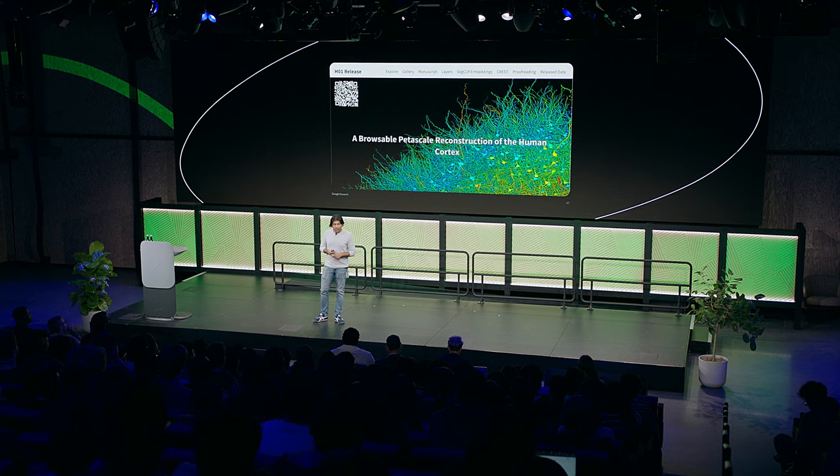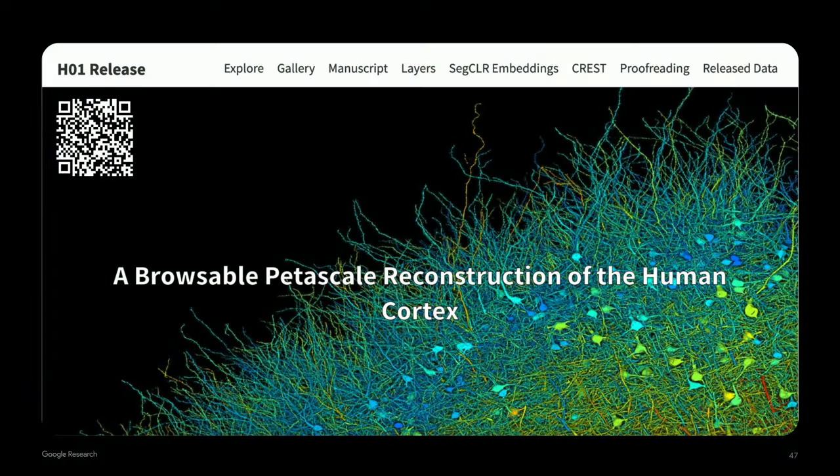That's sort of the beauty of science like this. We don't need to be biased about what to look for. The goal is to provide a data set in which it's all there, and then a large community of researchers can find and study things on their own. We made all of this data public and easy to navigate, and you can check it out yourself. You can use the QR code or just Google browsable petascale reconstruction.